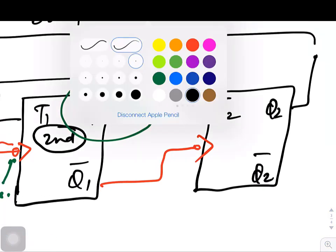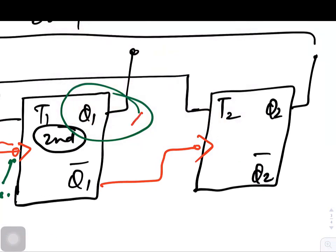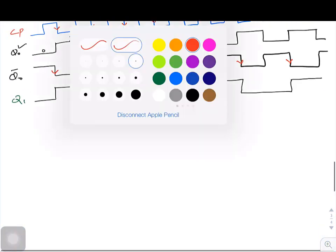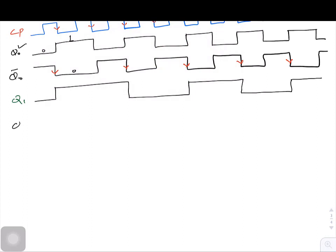This Q1 is not acting as a clock pulse. The clock pulse for the third stage is Q1 bar. So if this is Q1, then what must be Q1 bar? Q1 bar will be the opposite. If this is starting from zero, this will start from one. So this is my Q1 bar.